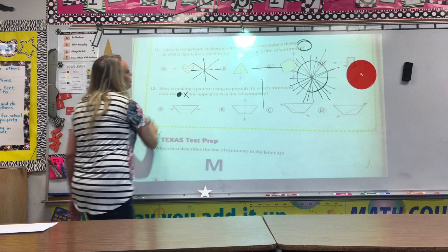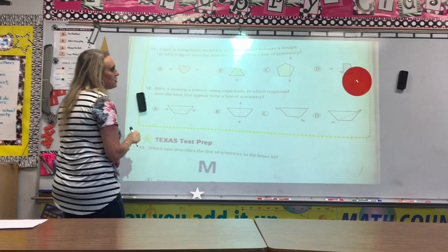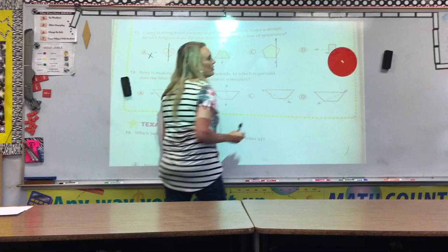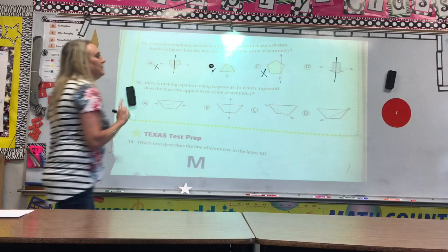All right, looking at 11. Casey is using foam stickers in different shapes to make a design. In which figure does the blue line appear to be a line of symmetry? So, this time, we're looking for the line of symmetry. So, if the heart would have been here, then it would have had the line, but it doesn't. B, oh, looks like it could be. B, the line on the pentagon is too far over. And the arrow, they drew it in the wrong place. They should have put it vertically. So, it definitely is B.